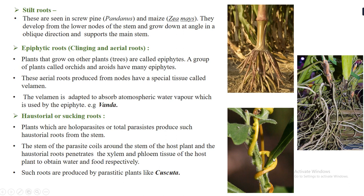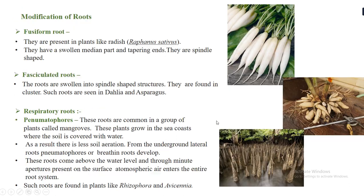The last modification is haustorial or sucking roots, which are parasitic. The example is Cuscuta, also called Amarveel. It is a parasitic plant that grows on another plant and produces haustoria — sucking roots — that penetrate the host plant's xylem and phloem to absorb nutrition from it.